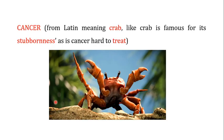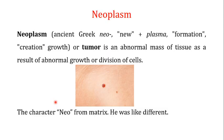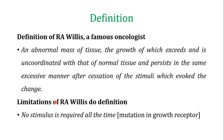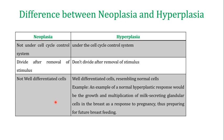In the last video I told you that the term cancer is derived from the Latin meaning crab, as the crab is famous for its stubbornness — this is why cancer is hard to treat. I told you about the neoplasm, that a neoplasm or tumor is an abnormal mass of tissue as the result of abnormal growth or division of the cell. We also discussed neoplasia and hyperplasia: both involve overgrowth or excessive cell division, but neoplasia is abnormal cell division whereas hyperplasia is normal excessive cell division.